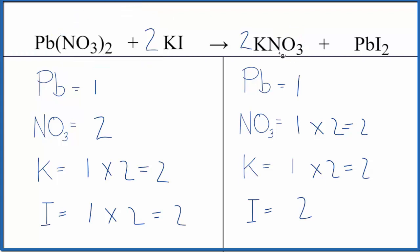If we write the states, nitrates are very soluble. Put an Aq after that. And potassium compounds, also very soluble. This lead 2 iodide though, it's insoluble. So when these react, this will actually be our precipitate. Fall to the bottom of the test tube as a solid, as our precipitate.